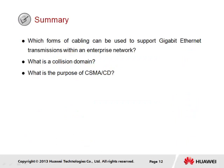In summary, which forms of cabling can support Gigabit Ethernet transmissions within an enterprise network? Ethernet twisted pair cables of Cat5e and greater, as well as fiber optic cables that support the 1000Base standard or higher, can be used to support transmission rates within the Gigabit range. A collision domain is a physical segment of the network within which signals carrying data are transmitted. Shared collision domains have the potential to experience collisions from simultaneous transmission by two end stations on the same medium. Isolated collision domains ensure collisions do not occur by dedicating signal transmission to different physical segments, as found in twisted pair cabling such as Ethernet Cat5 and Cat5e.